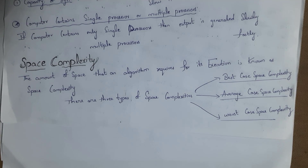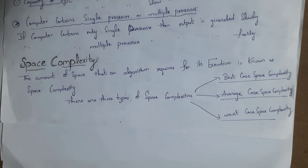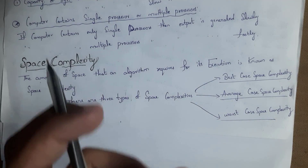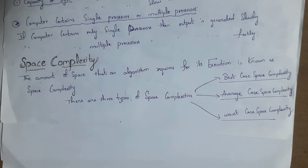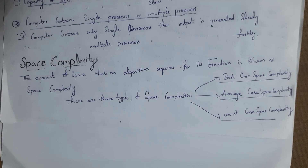The next topic is space complexity. Space complexity is similar to time complexity — the only difference is that instead of time, we consider space. The amount of space that an algorithm requires for its execution is known as space complexity. Space complexity is also classified into three types: best case space complexity, average case space complexity, and worst case space complexity. Best case requires minimum space, average case requires average space, and worst case requires maximum space.